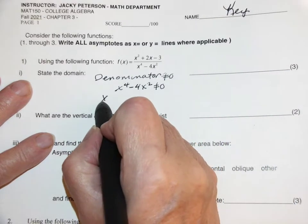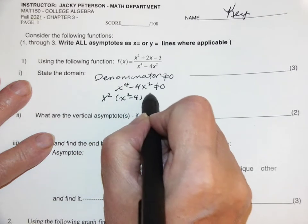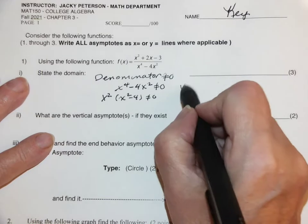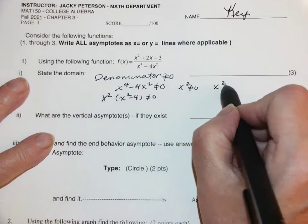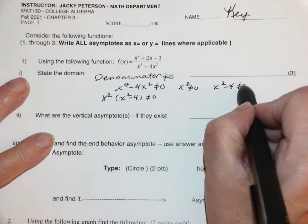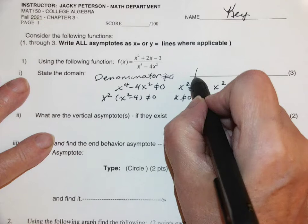Greatest common factor of x squared. x squared minus 4 can't be zero. x squared can't be zero. x squared minus 4 can't be zero. x can't be zero, so that's one of them.